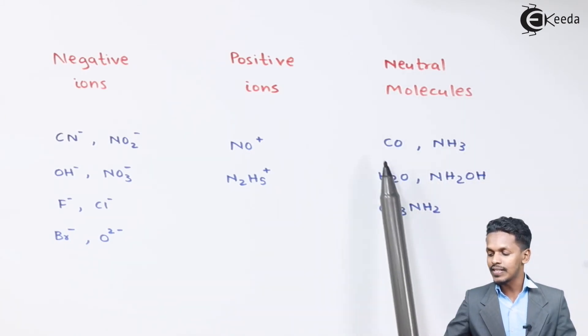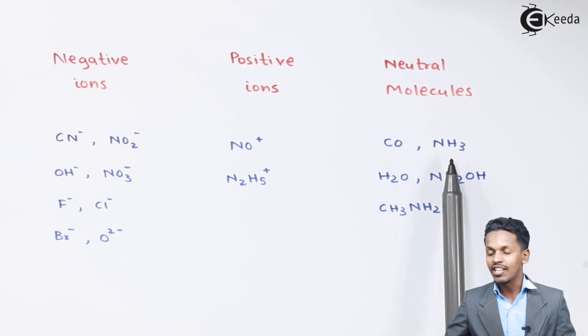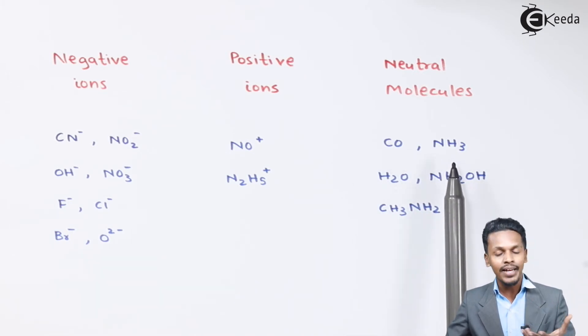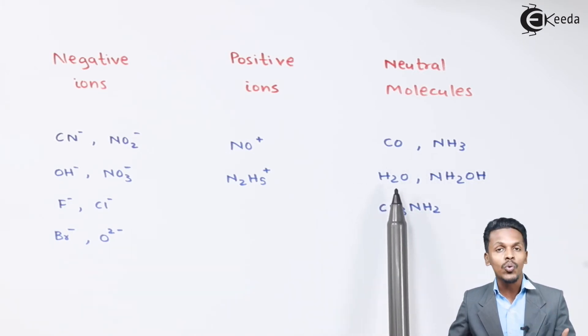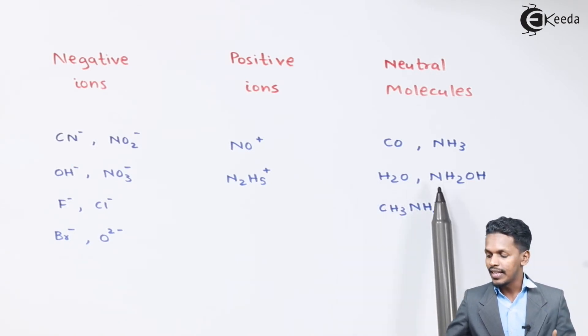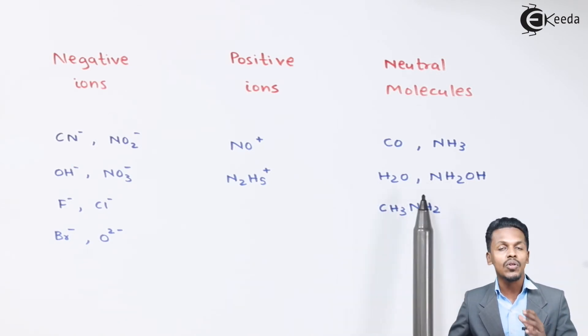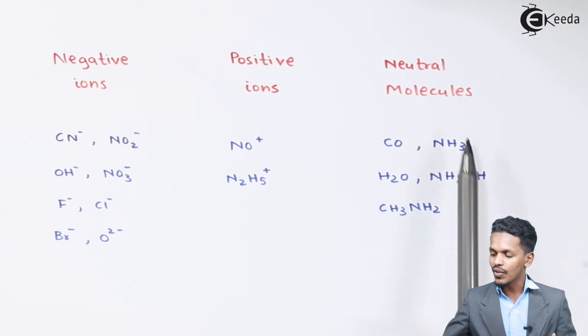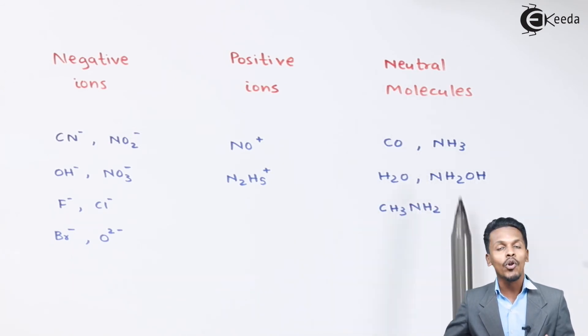And talking about the neutral molecules, CO is carbonyl, NH3 is amino or amide, the next one is H2O which is called aqua or water. The next one is NH2OH which is also known as hydroxylamine, and the next one is CH3NH2 which is known as methylamine. So therefore this all are basically neutral molecules.